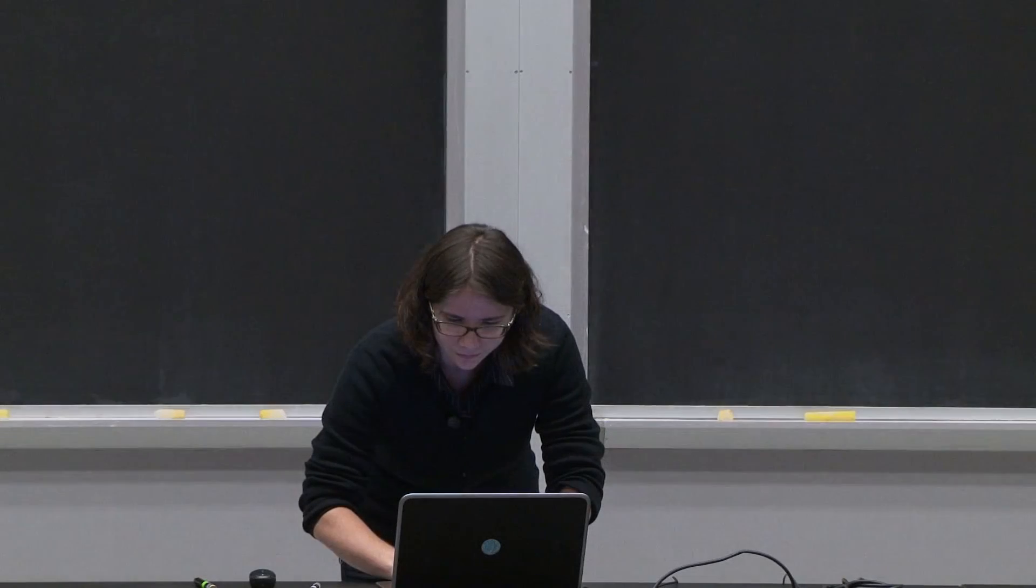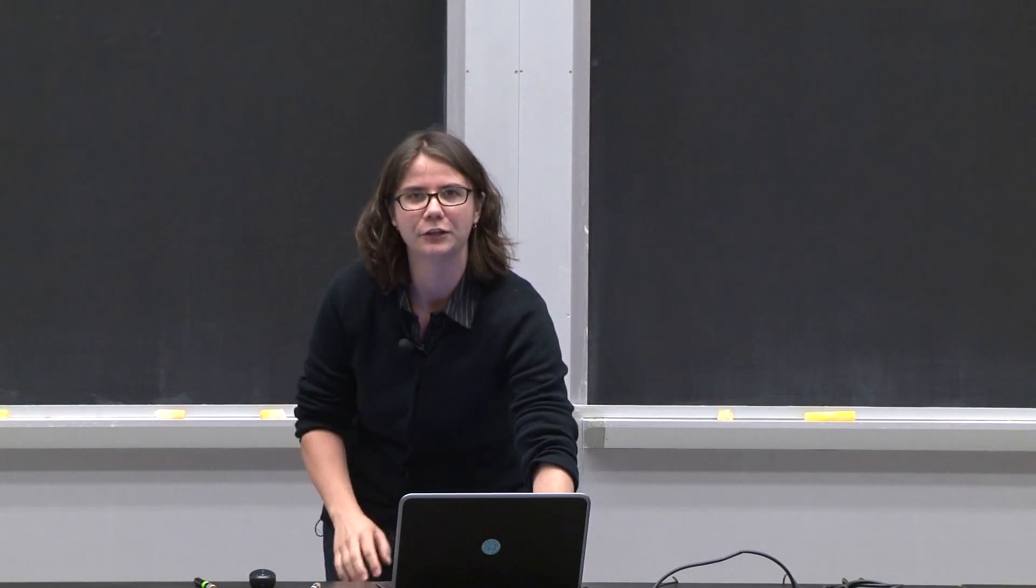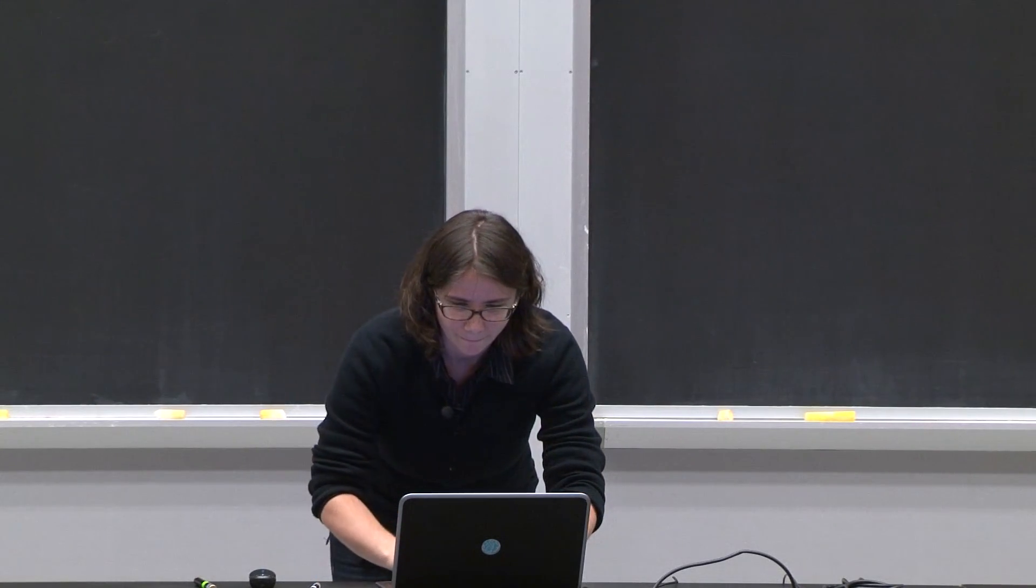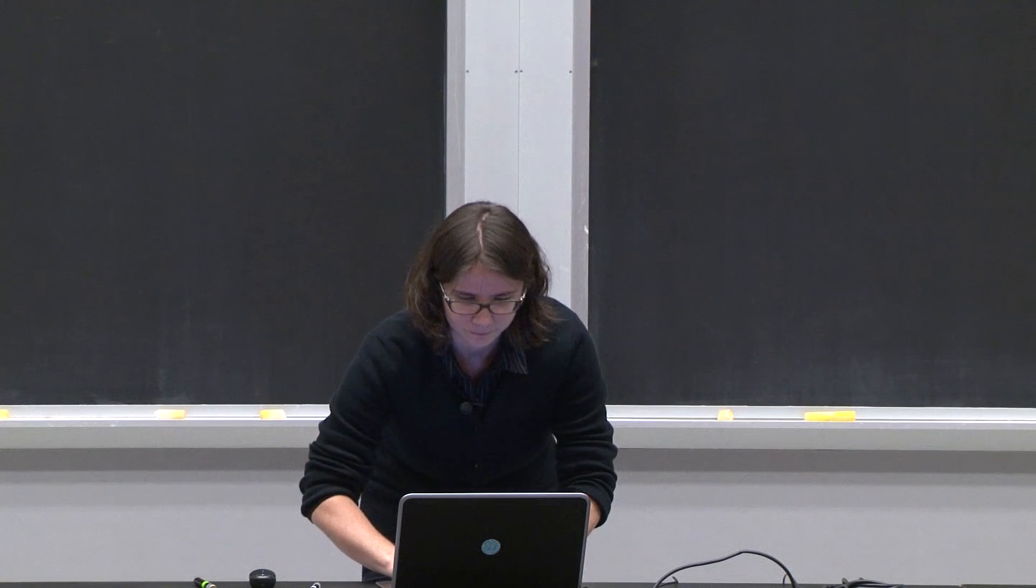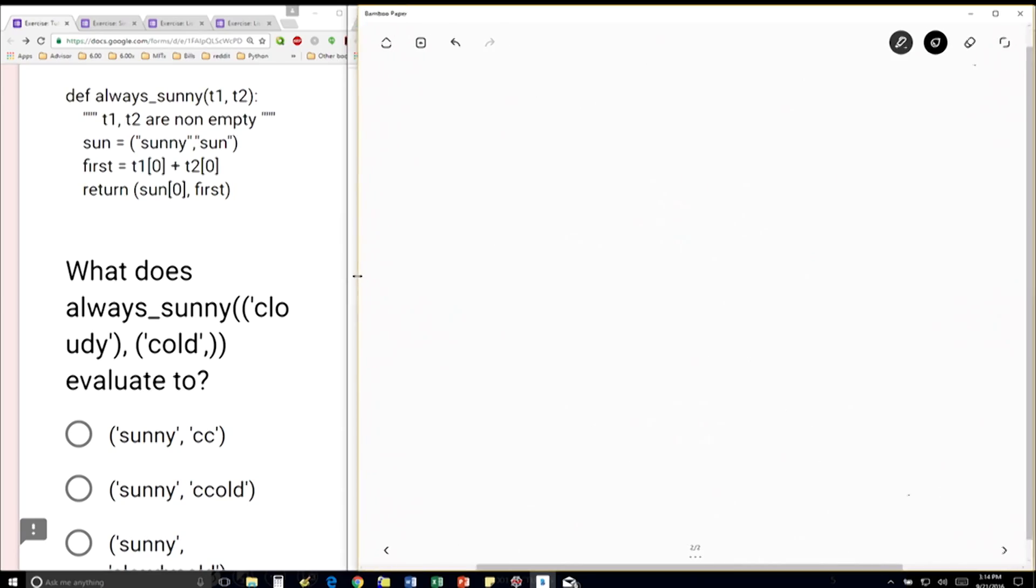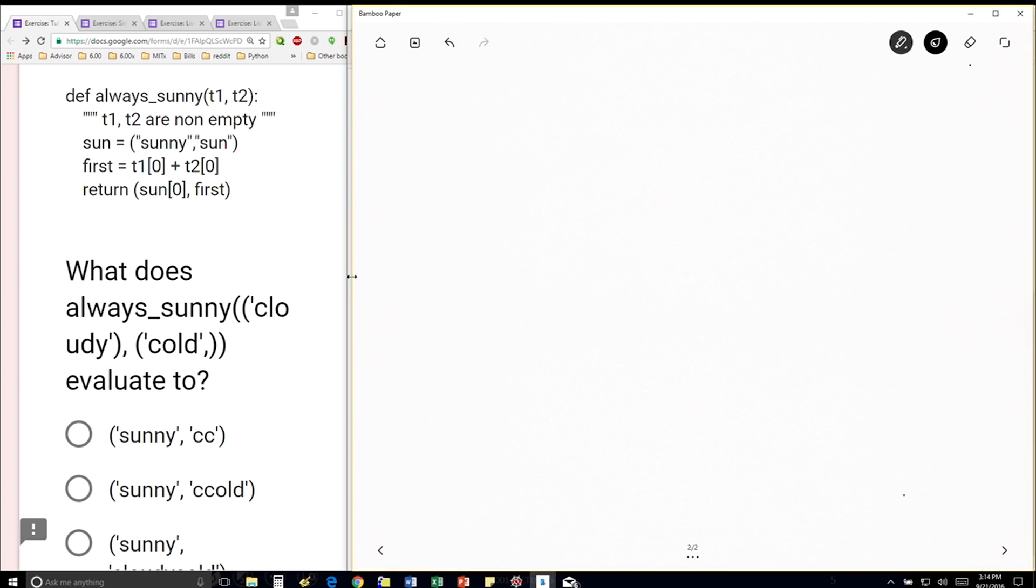All right, we've got some good competition here. So let's actually work through it. OK, so I have a function called always_sunny, and it's going to take in two variables, t1 and t2. And I'm calling it with cloudy and cold. So when I do my function call,